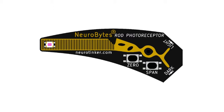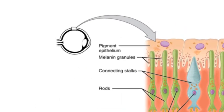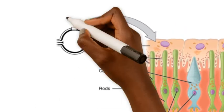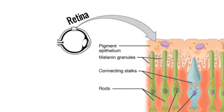Rod photoreceptors are unique in several ways. Even though they are sensory neurons, photoreceptors are found in the retina, which is considered part of the central nervous system. Unlike cone photoreceptors, which detect red, green, or blue light best, rods are best at detecting changes in overall light and dark, particularly at lower light levels.